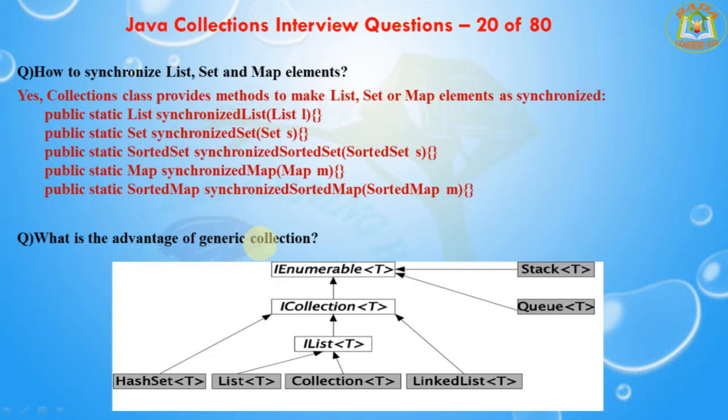The next question is: what are the advantages of generic collections? If we use a generic class, we don't need type casting. It is type-safe and checked at compile time. Generics is used so that we do not need type casting, it ensures type safety, and it is checked at compile time whenever we are compiling. In summary, generics is used for type casting and type safety.